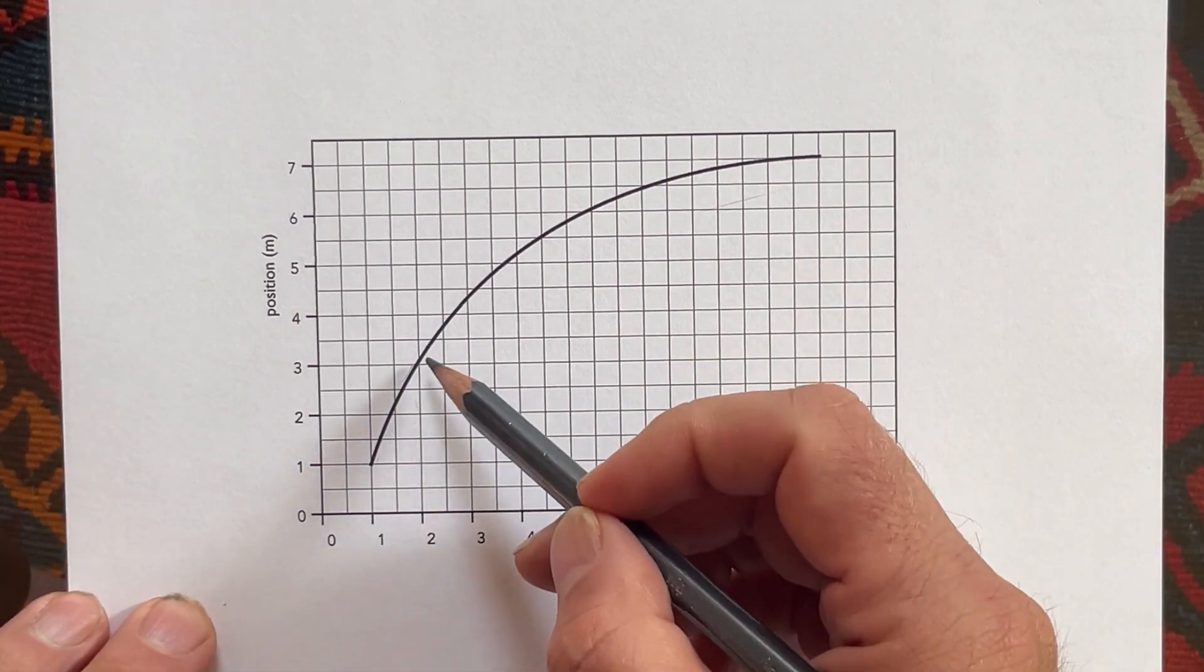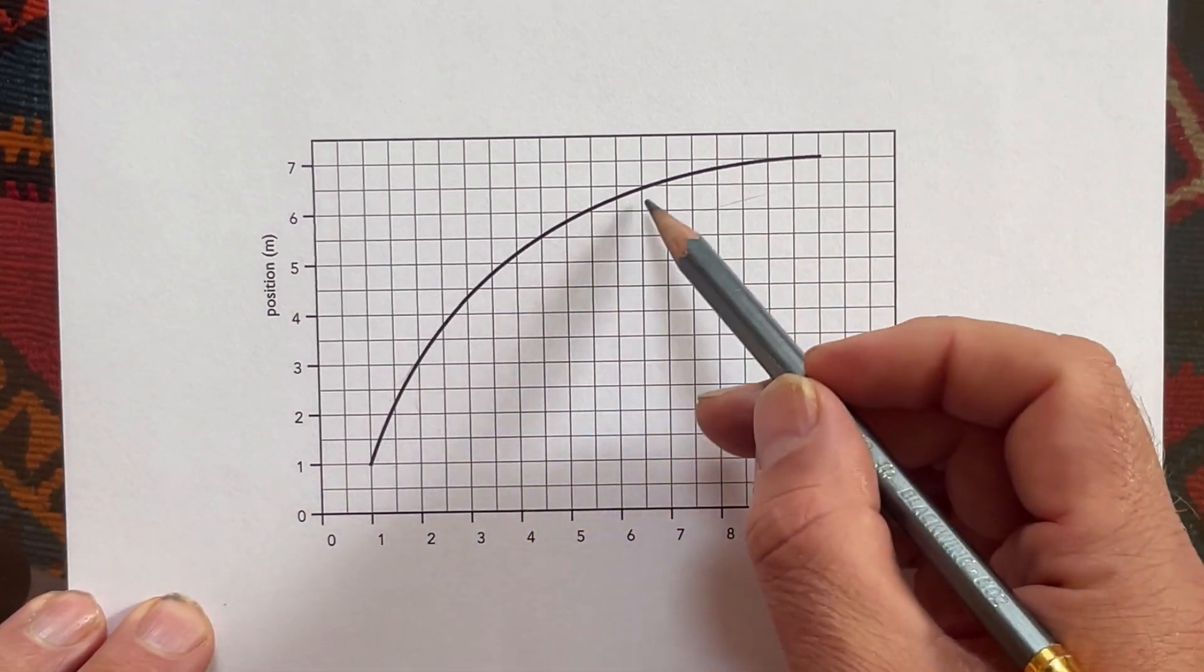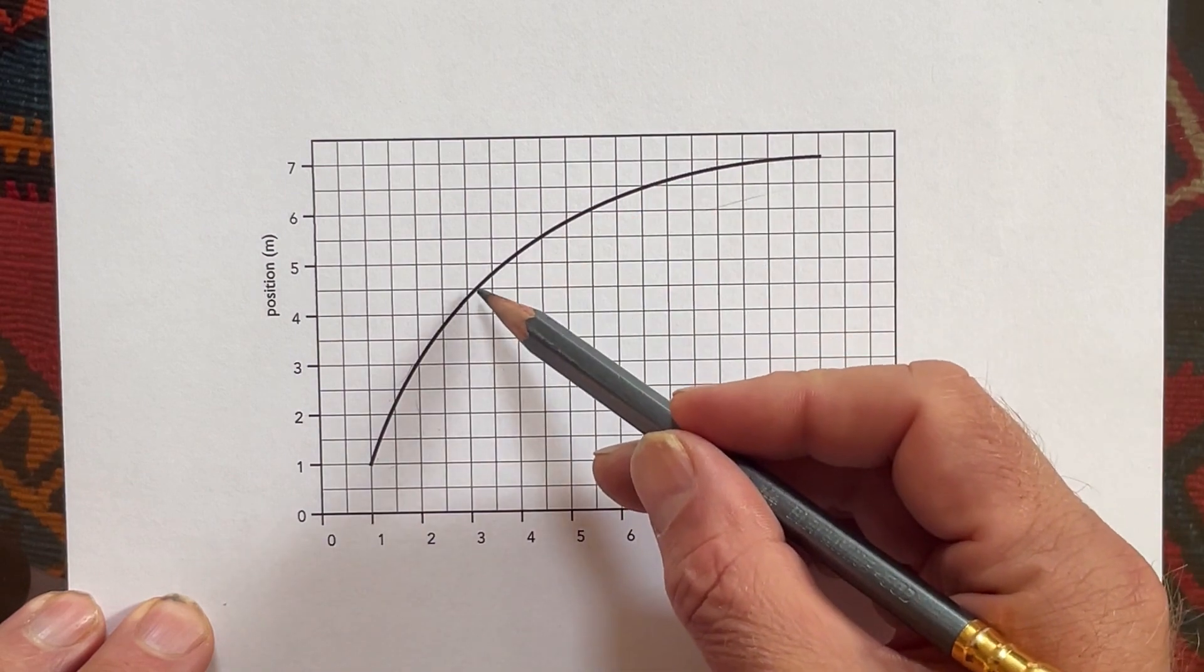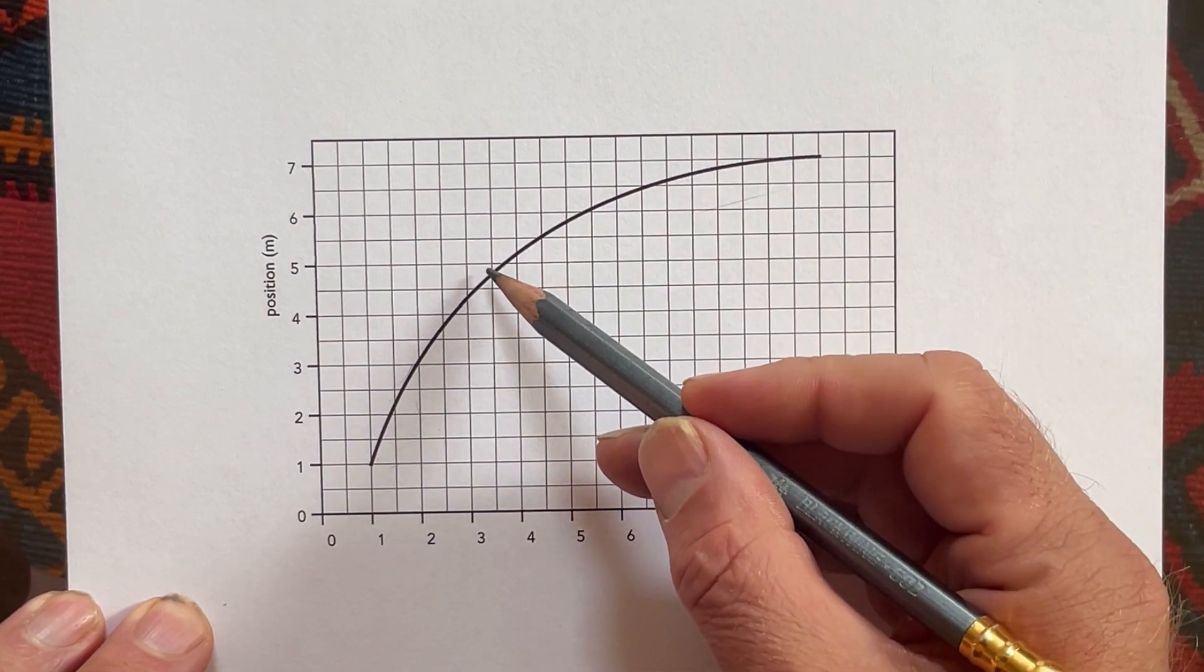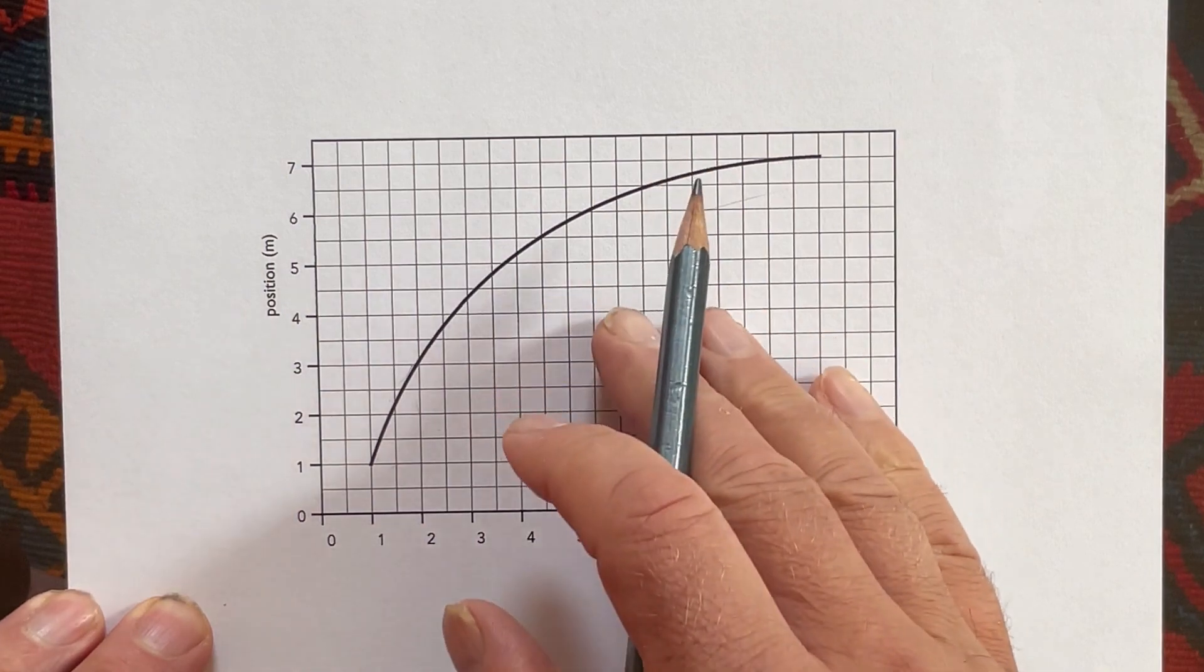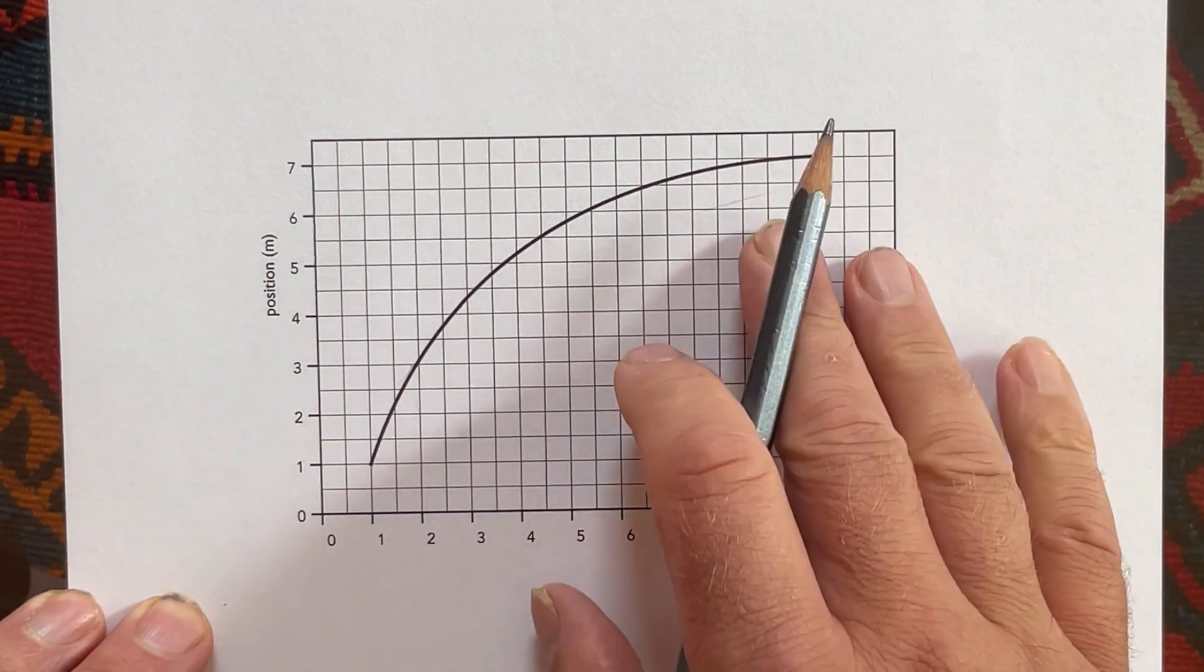The way we do that is by finding the slope. We see the slope is changing here. This is a curve. We know how to find the slope of a line, it's a rise over run kind of thing. But when it's a curve, we can't just find the slope of the whole curve.